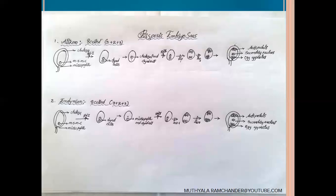The allium embryosac at the mature stage is similar to the polygonum embryosac — polygonum also contains eight cells arranged in a three plus two plus three arrangement, so allium is similar to the polygonum type of embryosac.